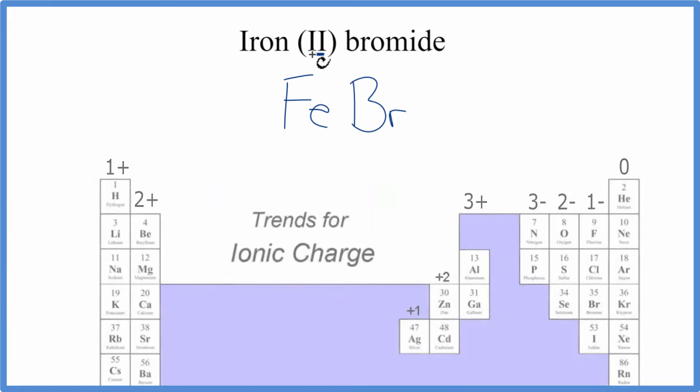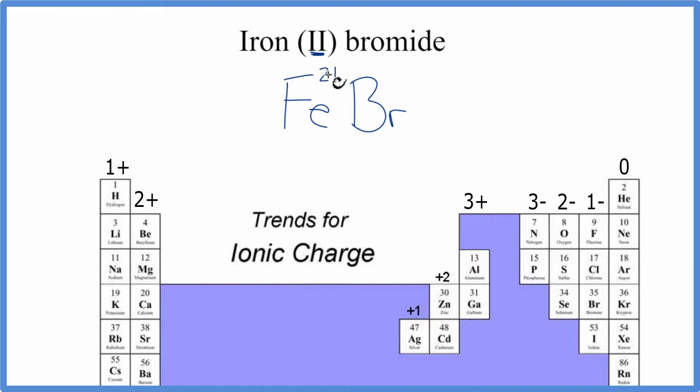We have some help, though, because this 2 here tells us the charge on the iron, so the iron has a charge of 2+. We look at the periodic table, bromine has the charge of 1-.